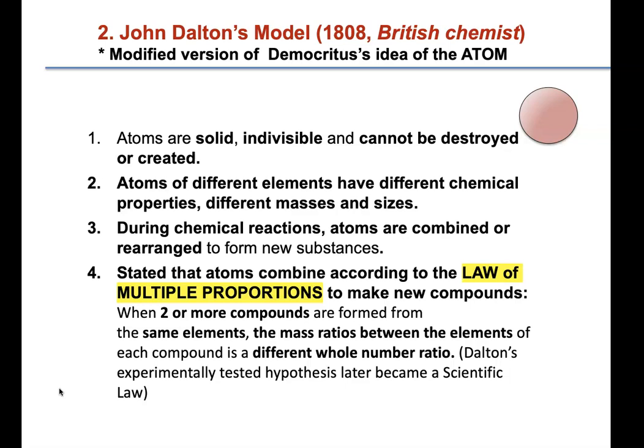Just as chocolate cake and chocolate chip cookies use the same ingredients but in different proportions, this became a law because it kept being proven and could not be disproved. The law of multiple proportions states: when two or more compounds are formed from the same elements, the mass ratios between the elements of each compound are different whole number ratios.